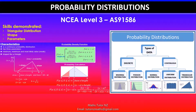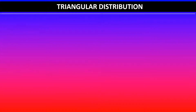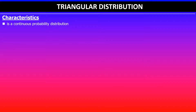Greetings everyone. In this video we'll be looking at NC Level 3 probability distributions achievement standard, focusing on triangular distribution - its shape and parameters. The triangular distribution is a continuous probability distribution.